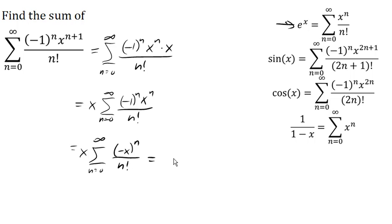And now we can see that that is the series for e^x where the x is being replaced by negative x. And so the sum of this series then becomes e^(-x), and there's the sum of that series.